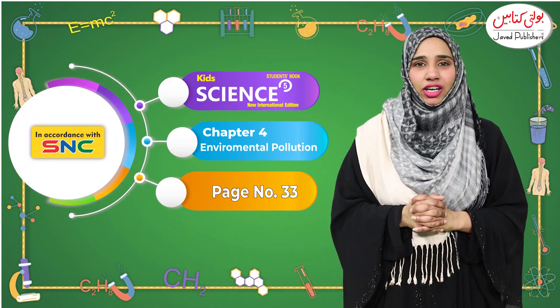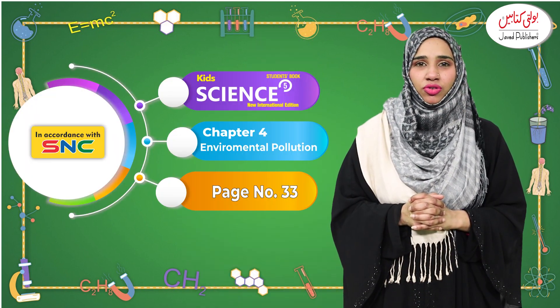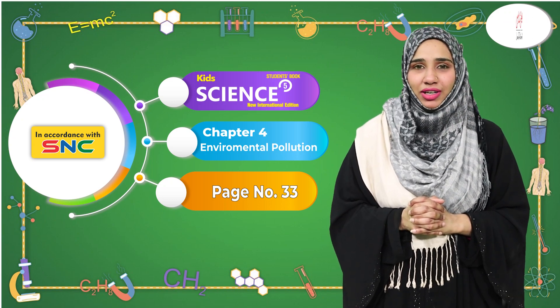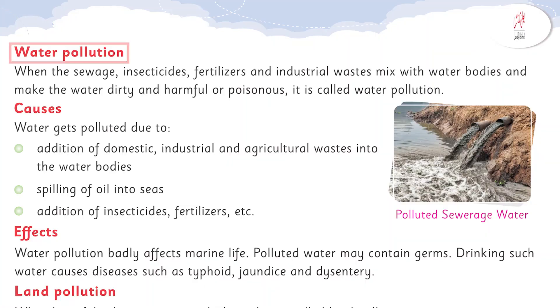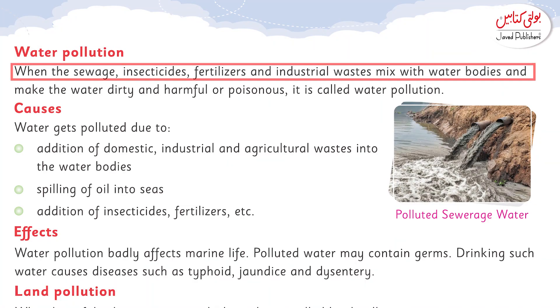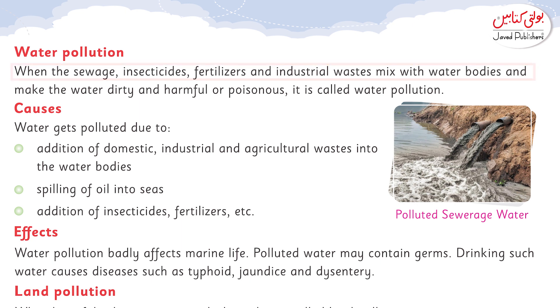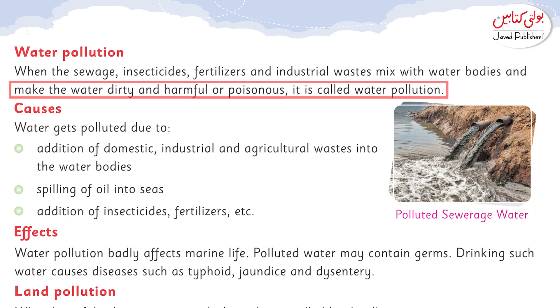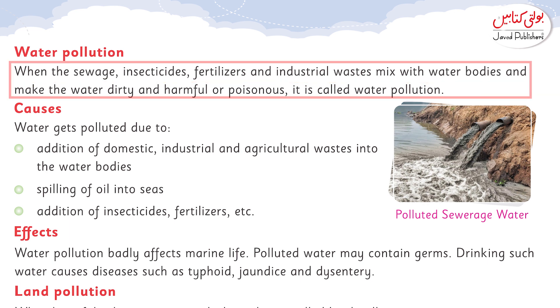Assalamu Alaikum. Welcome to Javeh Publishers. We are studying kids science grade five, chapter number four. The topic is environmental pollution. We have water pollution: when sewage, insecticides, fertilizers, and industrial waste mix with the water body, they make the water dirty and harmful or poisonous. This is called water pollution.